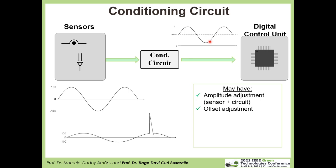The third thing to consider is protection. Suppose we are measuring a current and suddenly there is an abrupt change with a high value. As the conditioning circuit is just reducing amplitude and applying offset, this large signal would reach the digital control unit input and could damage it. To avoid that, we include protections which will saturate or limit this signal so that the digital input is protected.